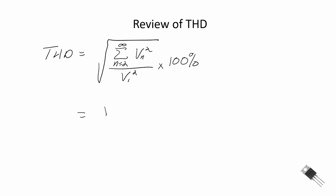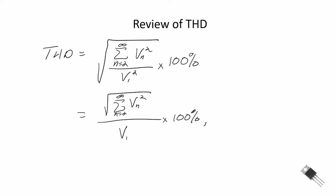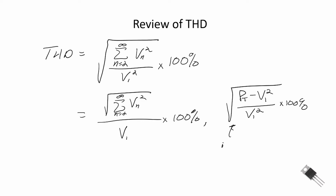We can simplify this a little bit and show that it's equal to the sum from n equal to 2 to infinity of Vn squared, where Vn are the harmonic components of our modified sine wave. We had another form introduced in a previous video: the total power minus the power in our fundamental, all divided by the power in our fundamental. Any of these forms work; this one is based on the use of our RMS voltage to find the total power in our signal.